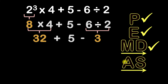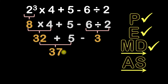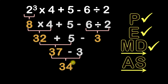That takes us to step four — addition or subtraction from left to right. We'll do 32 plus 5 first. 32 plus 5 is equal to 37, so I'll put 37 right under. I'll bring down the minus sign and the 3. And 37 minus 3 equals 34. So we're done with step four, and our final answer is 34.